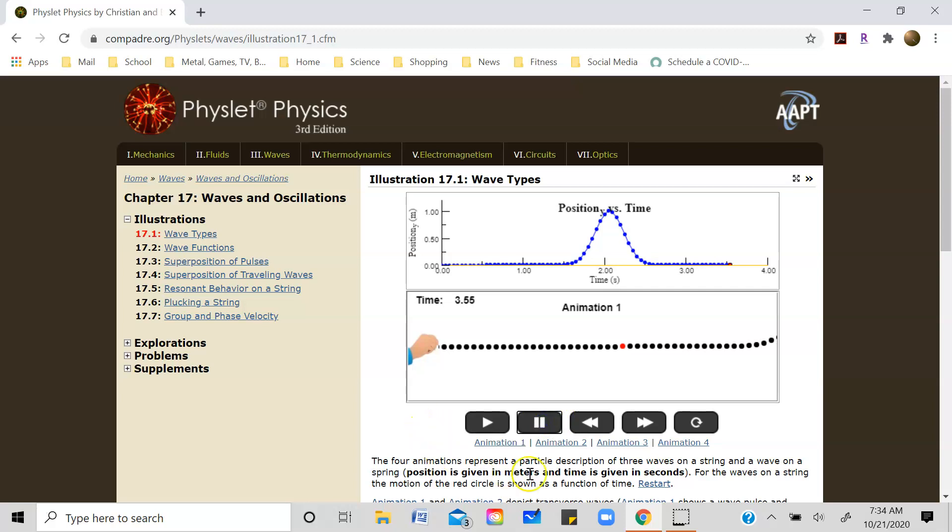Now let me switch to the longitudinal pulse. With the longitudinal pulse, the hand right here is going to move in a direction that is parallel to the direction of propagation, but once again what they plot here is the disturbance of this red dot from its equilibrium position as a function of time.